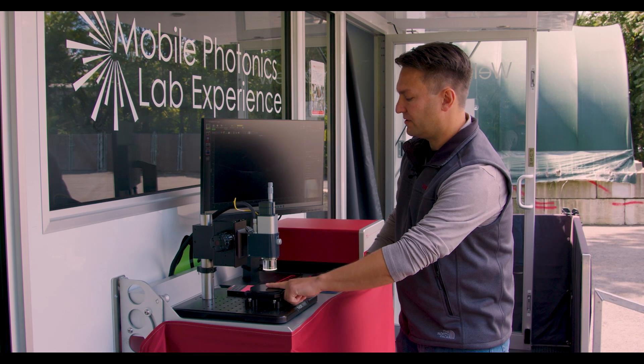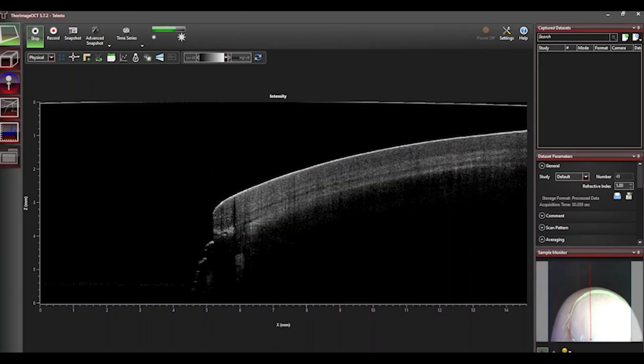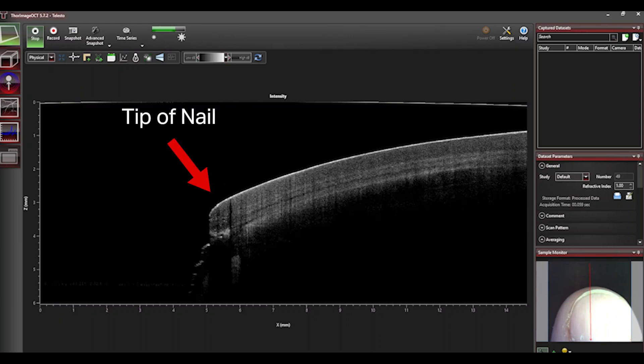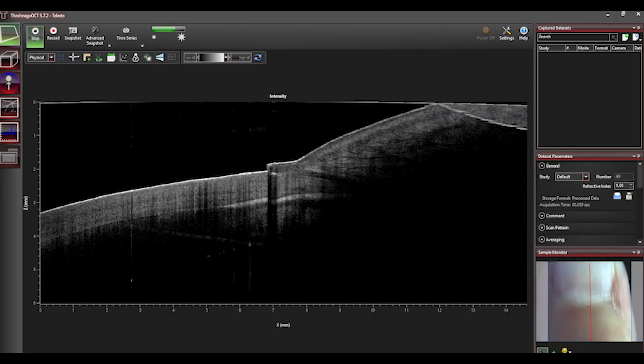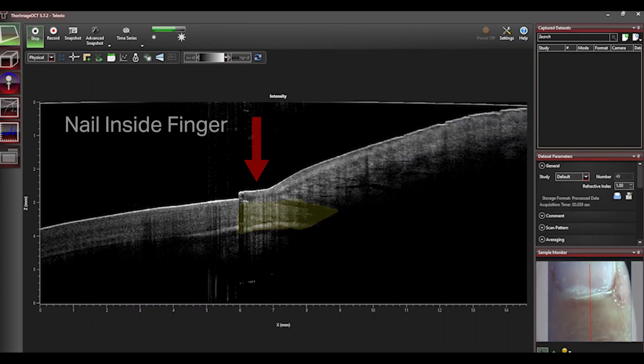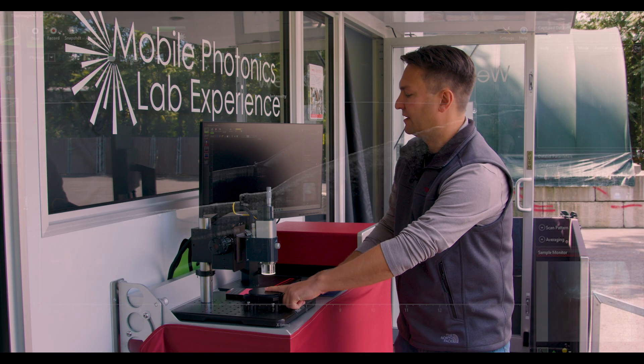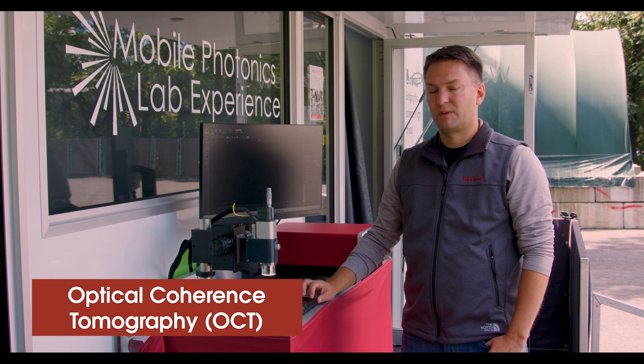If we flip this over, and I look at my fingernail, this is the very tip of my nail, the nail going back. And if I slide my finger forward, you can actually see where the nail comes into my finger, the skin coming down, and the cuticle.